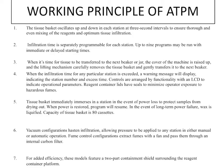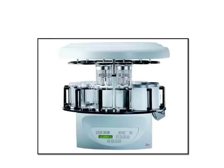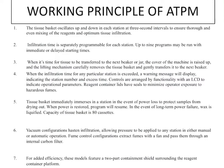Infiltration time is separately programmed for each station. Up to 9 programs may be run with immediate or delayed starting time. When it is time for tissue to be transferred to the next jar, the cover of the machine is raised up. The cover on top of the beakers lifts, and the tissue basket is placed into the next beaker. When the infiltration time for any particular station is exceeded or there is a timing mistake, a warning message is displayed so that transfer to the next station is prompted.